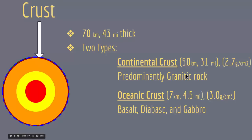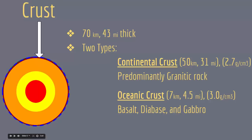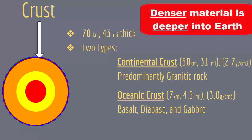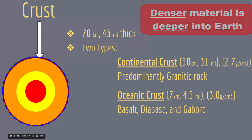Something important to keep in mind: the layers of the Earth are arranged mostly due to density. The crust is less dense than the mantle, the mantle is less dense than the outer core, and the outer core is less dense than the inner core. So density rules when it comes to layering of the Earth.